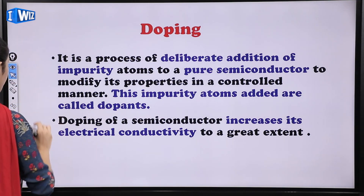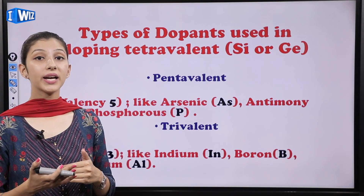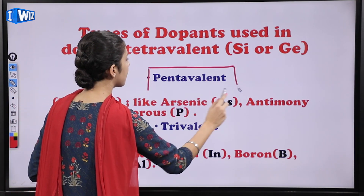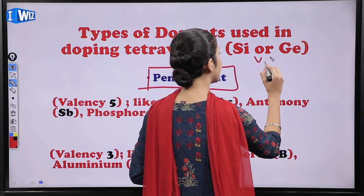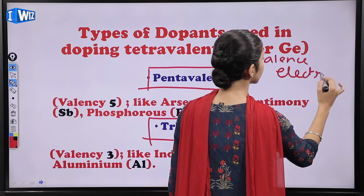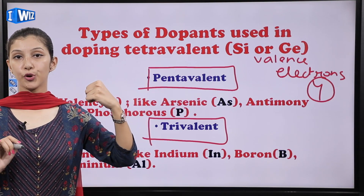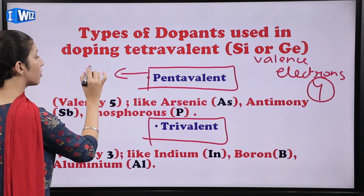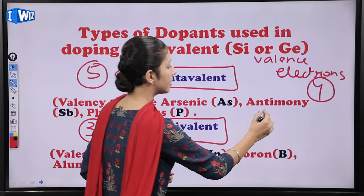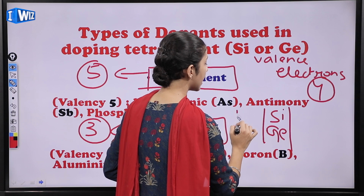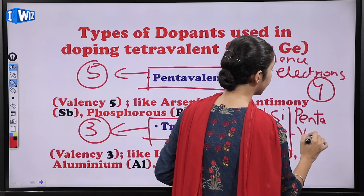Before studying extrinsic semiconductors, there are two types of dopants we add to an intrinsic semiconductor: first is pentavalent and second is trivalent. Silicon and germanium are basically tetravalent, meaning they have 4 valence electrons. If we add pentavalent impurity, those atoms have 5 valence electrons, and in case of trivalent dopants, they have 3 valence electrons.